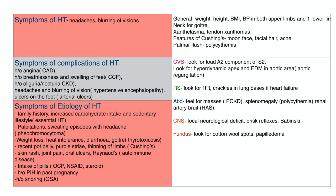Under examination, we look at the general weight, height, and BMI of the patient. We measure blood pressure in both upper limbs and one lower limb, checking supine first, then sitting up five minutes apart, then standing five minutes apart for any postural drop. We assess the pulse for quality, rate, rhythm, and character — whether it's bounding, and whether there's radio-femoral or radio-radial delay. We also assess the vessel wall for atherosclerosis.